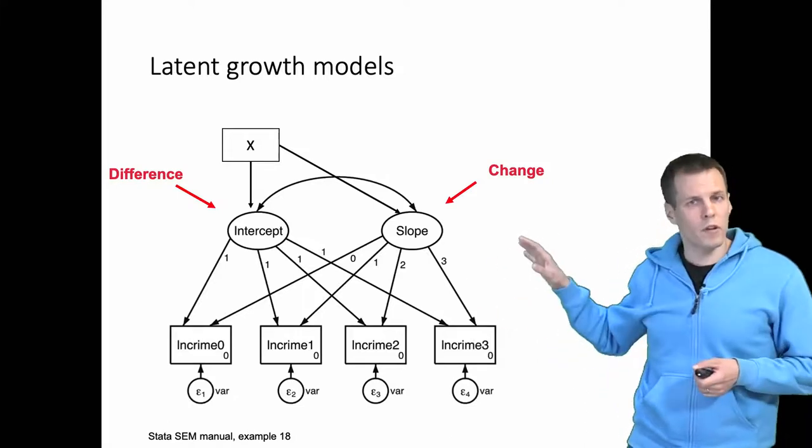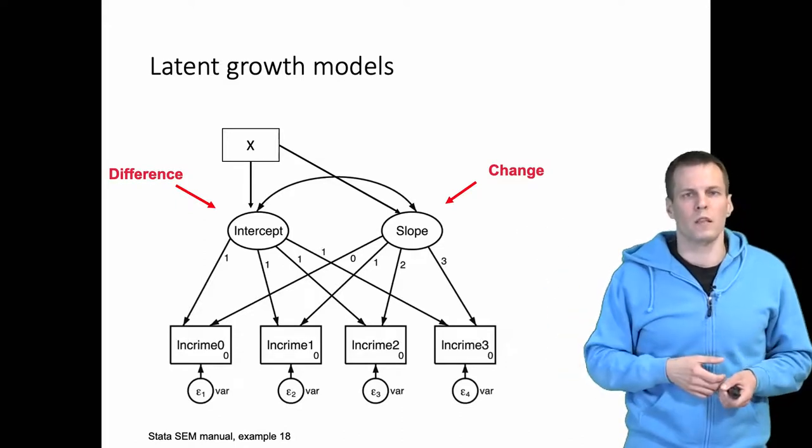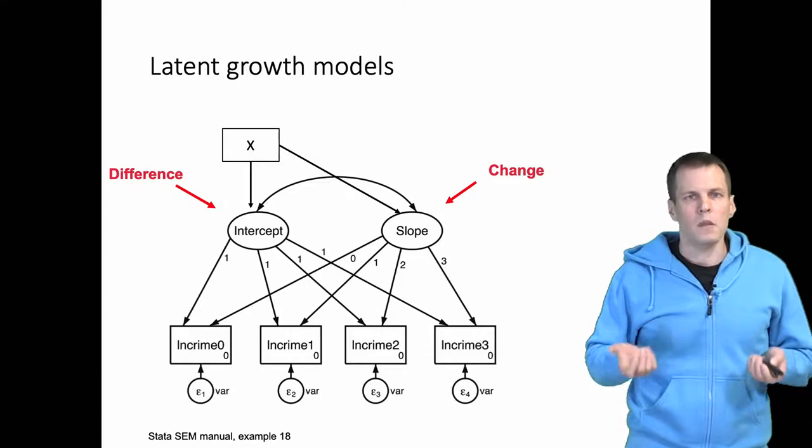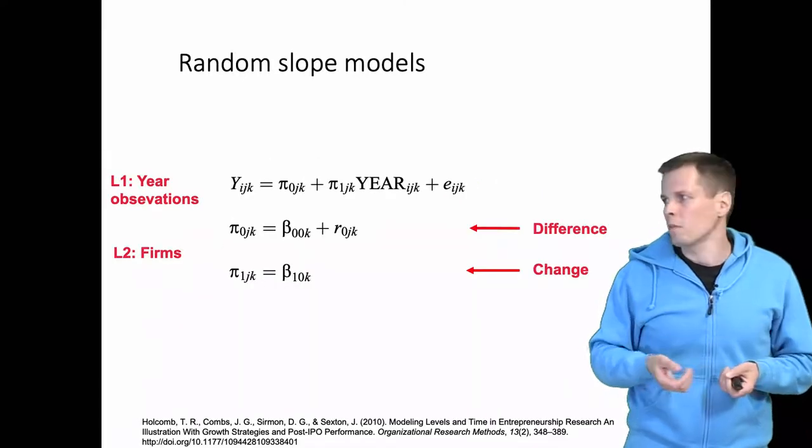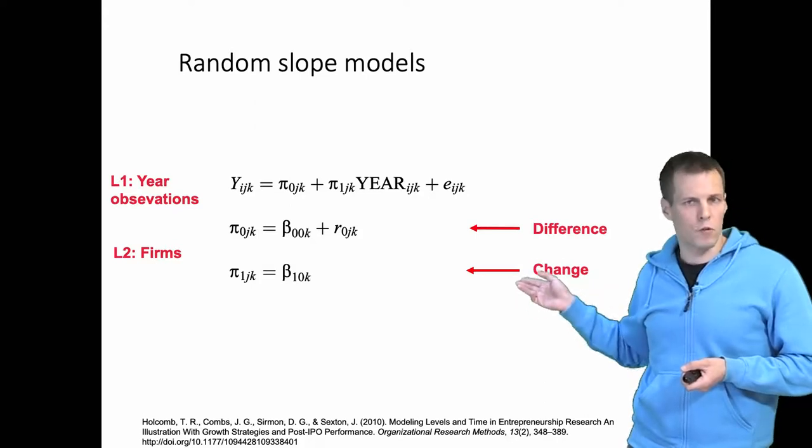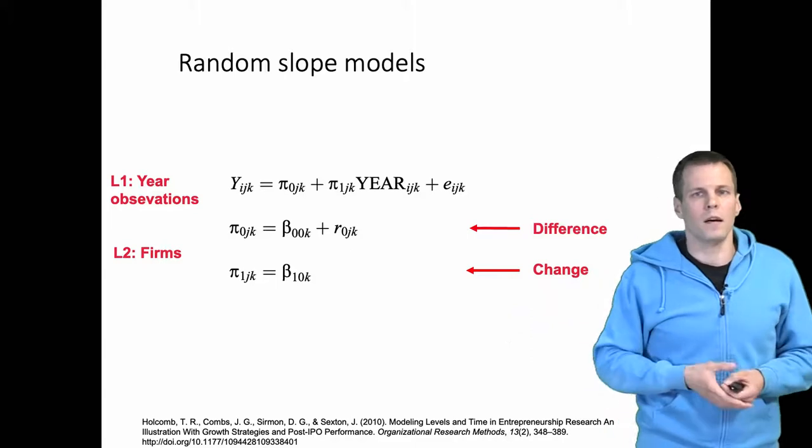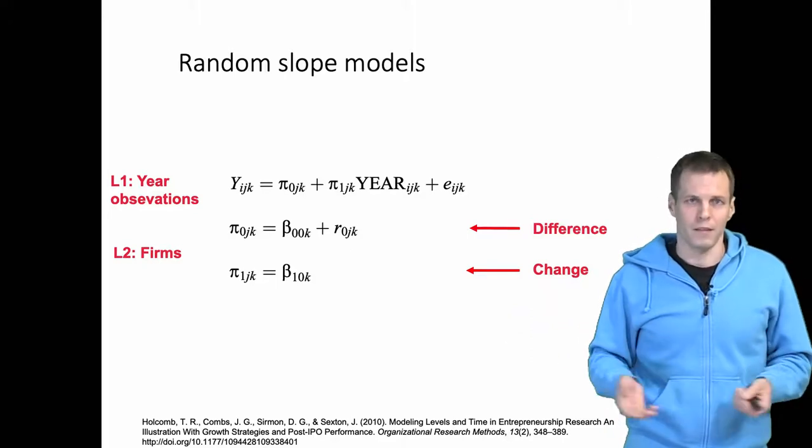Typically we are more interested in the change because a process that unfolds over time is more related to causality. The same thing can be seen in the mixed model. We have difference and change in the level 2 firms, or initial difference and change in the level 2 effects, and which one we are interested in again depends on the context.